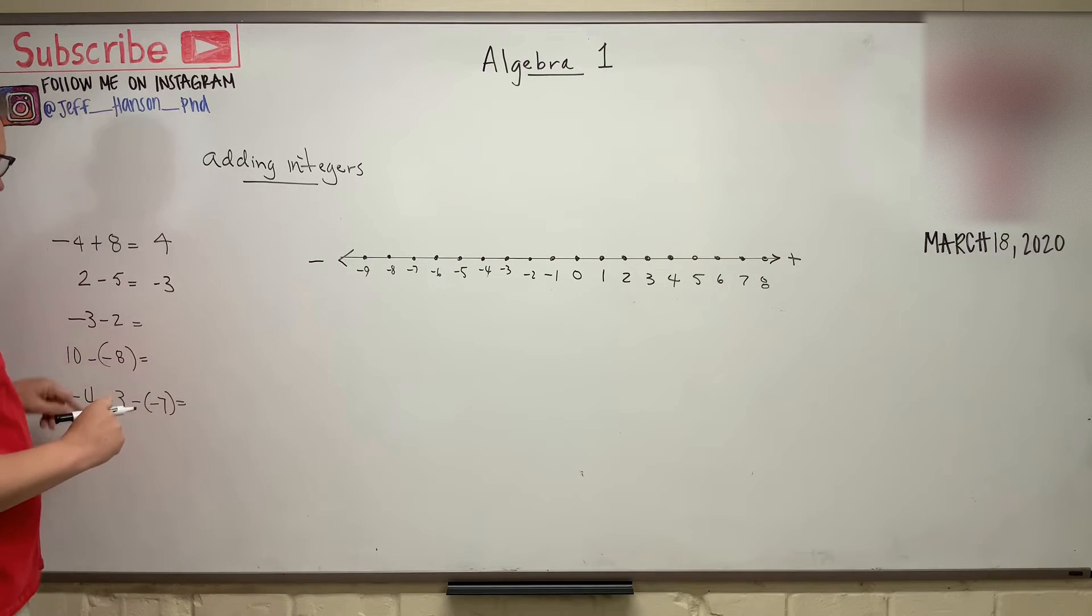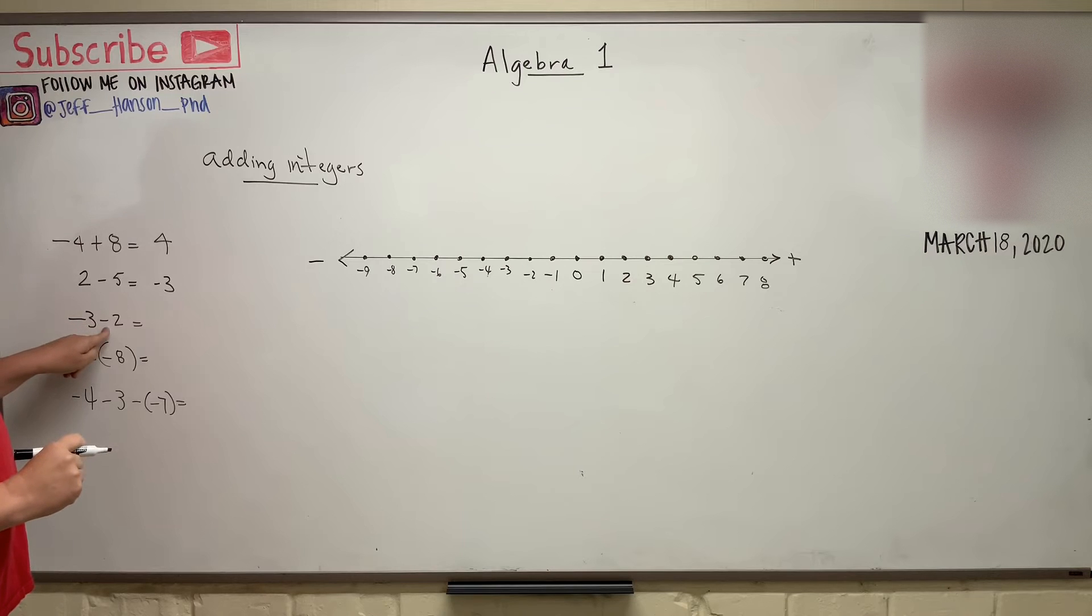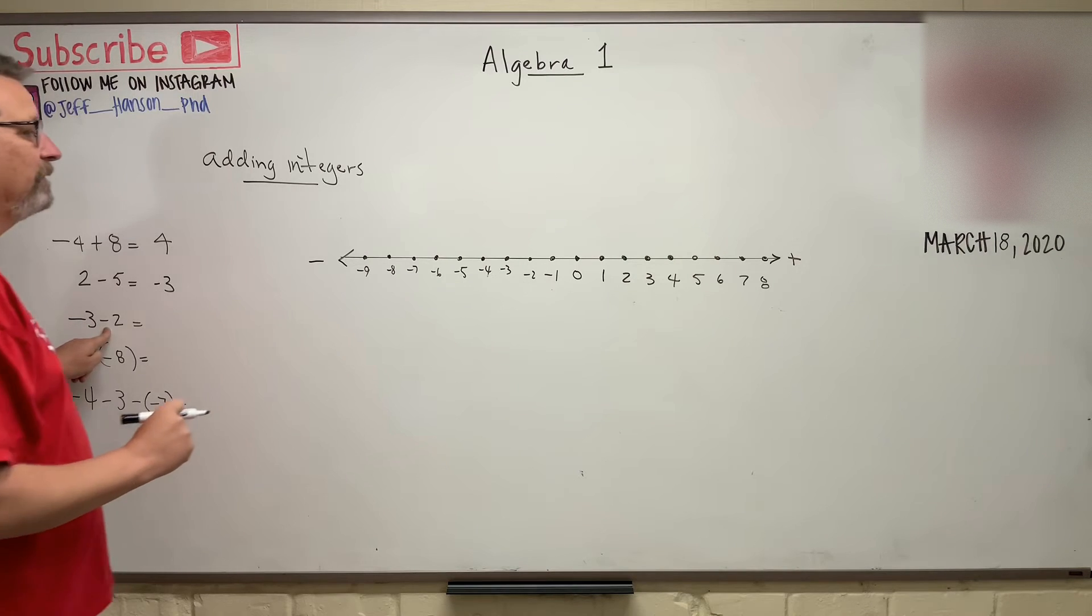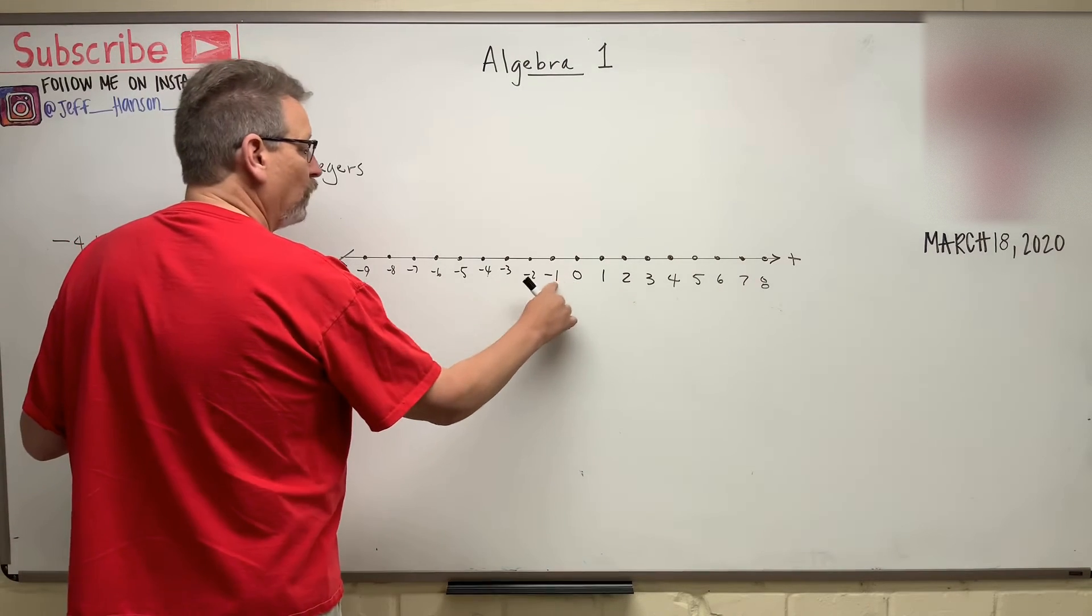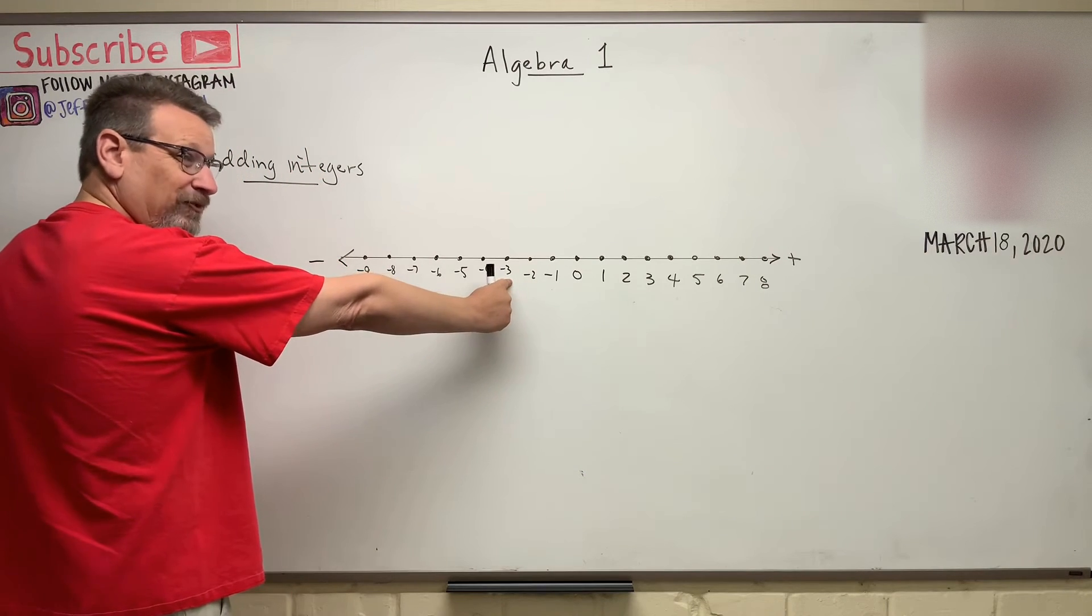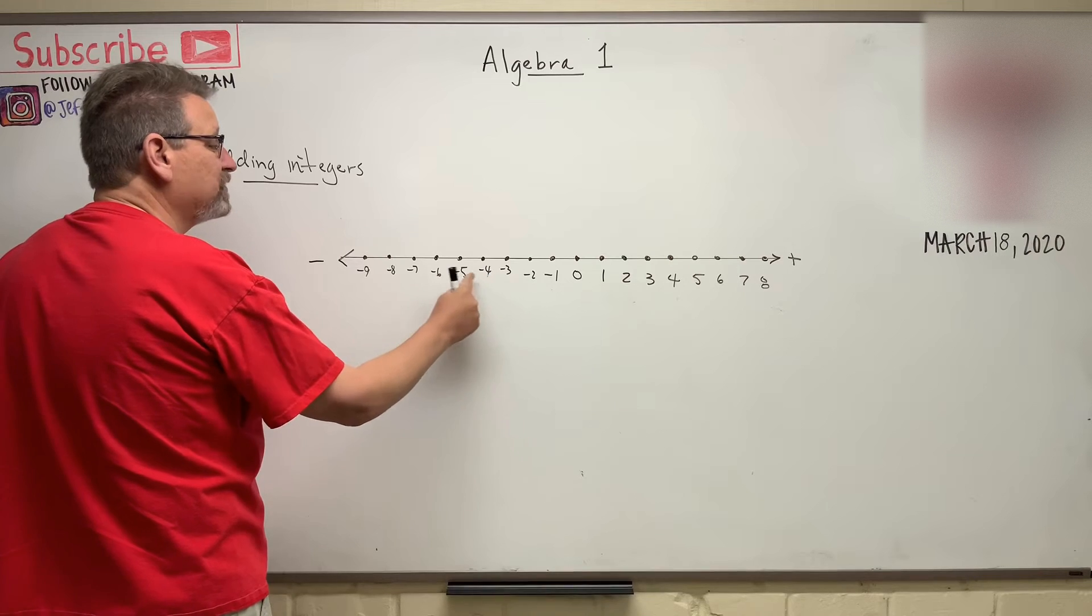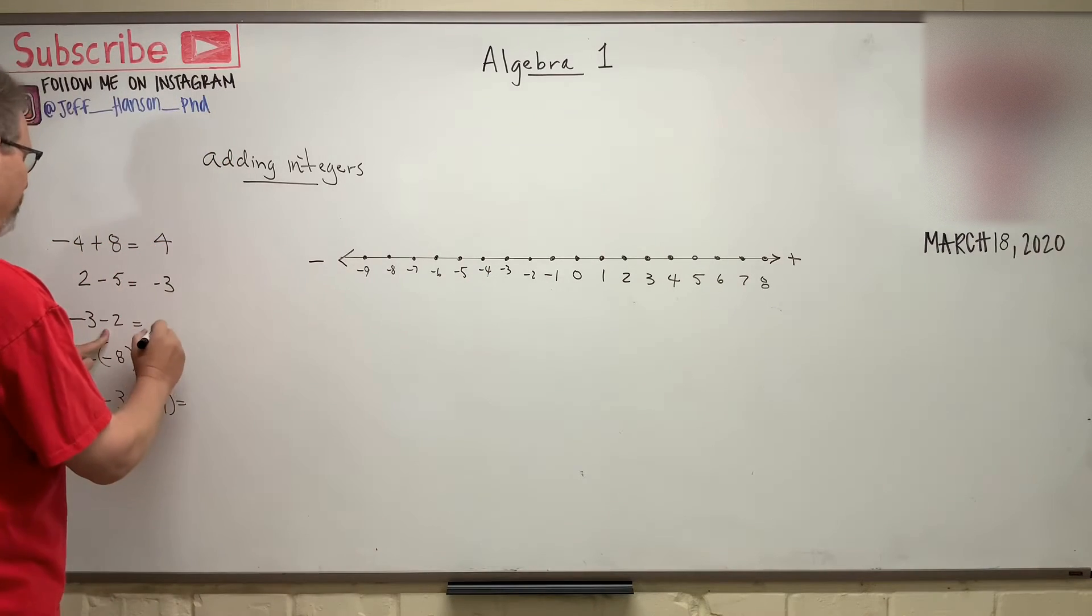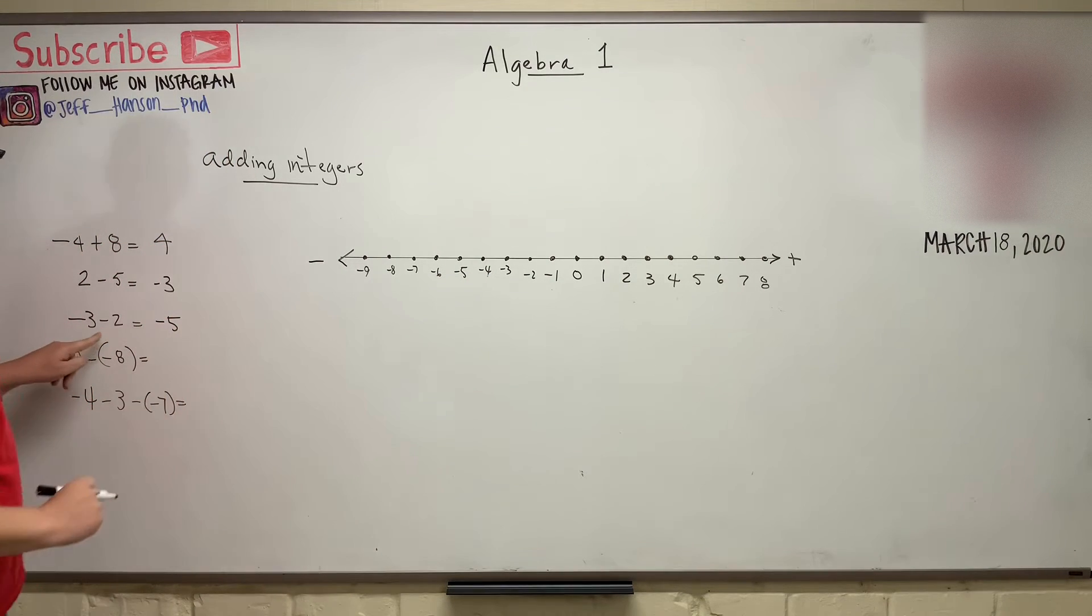How about negative three minus two? So if I go to negative three: one, two, three, and then from that I go minus two more: one, two, that takes me to negative five. So a negative plus a negative makes a bigger negative.